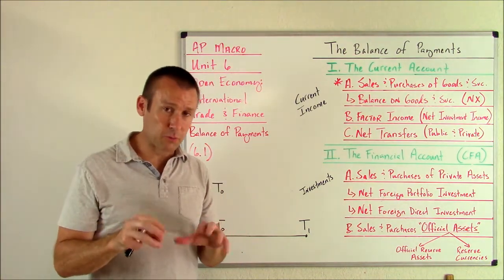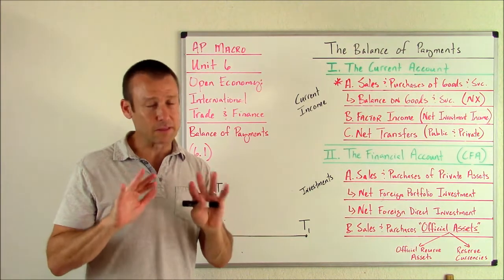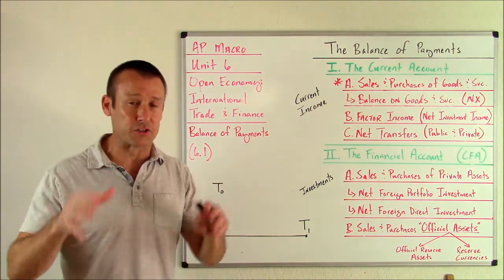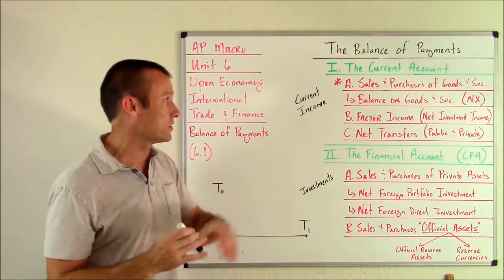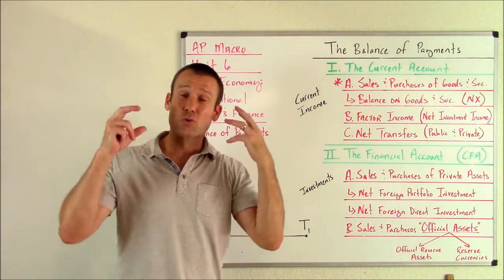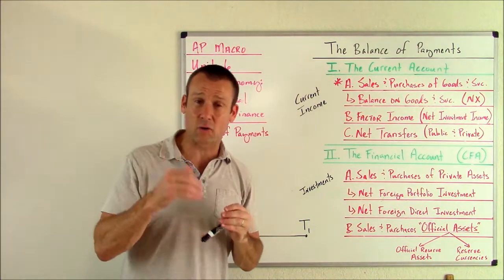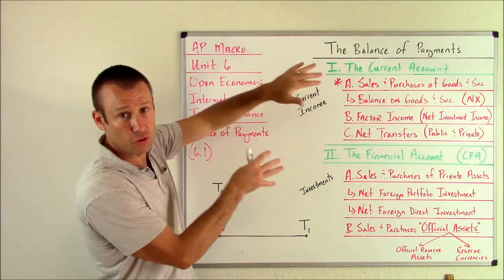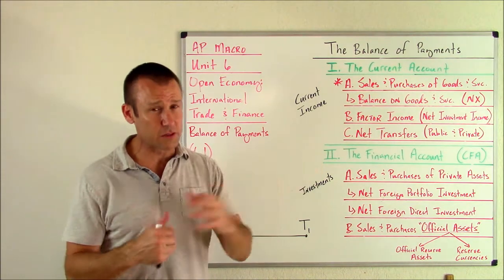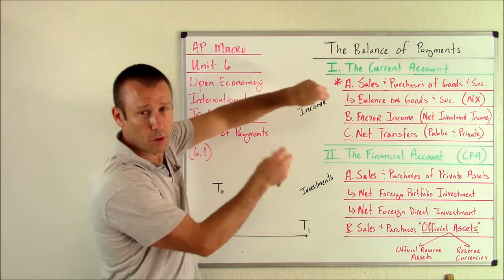There are some textbooks and international bodies that make this a little more complex. But the added complexity you might see out there is really just information at the margins. 99% of what you want to understand is right here. If you even want to understand the Financial Times or the Wall Street Journal, if you understand this, you totally understand enough. And for a 101 macroeconomics course, these two major accounts are definitely all you need to know.